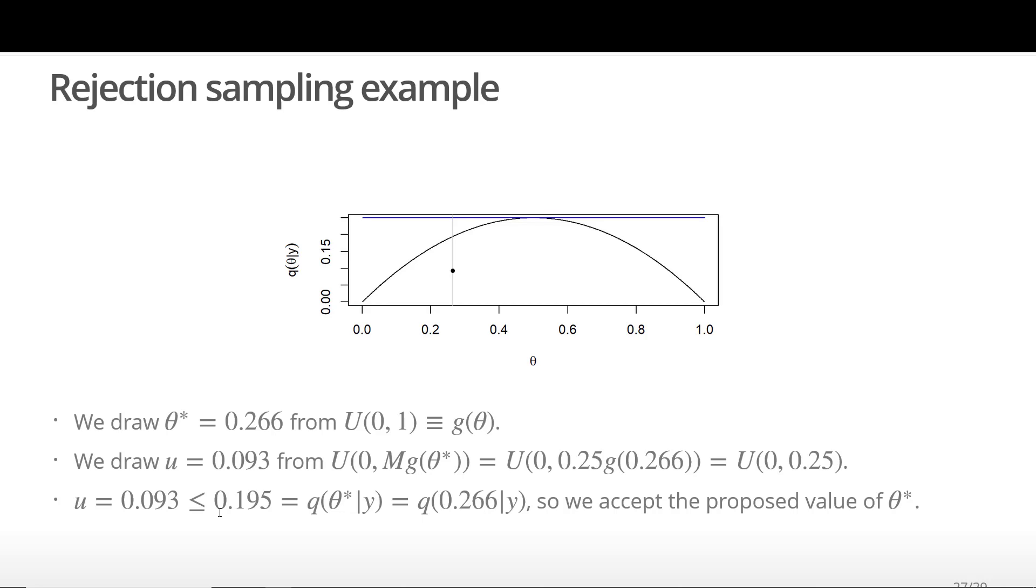The location of theta star is shown by the vertical gray line. The value of (theta star, U) is shown by the black dot. Since the dot is below the target density shown by the black line, we accept the value of theta star proposed.